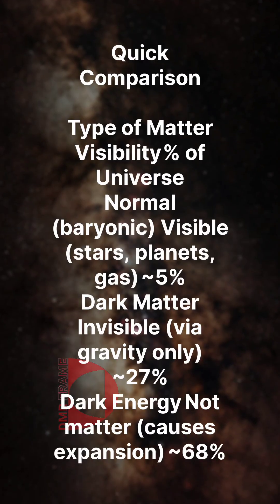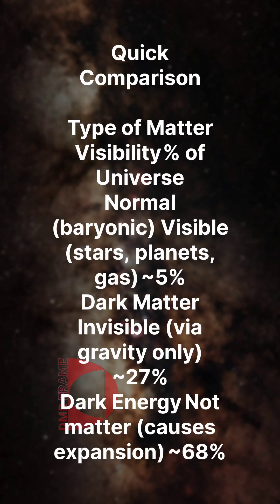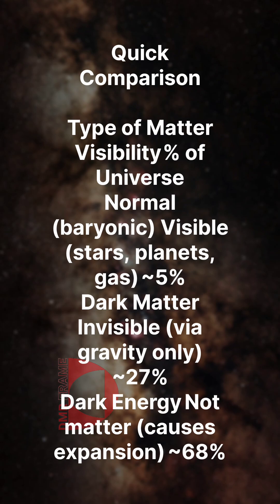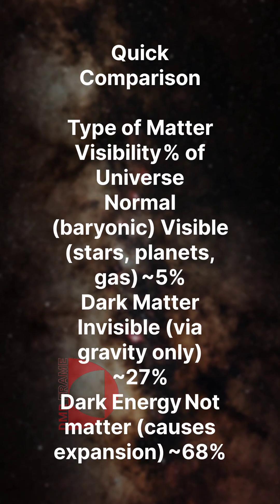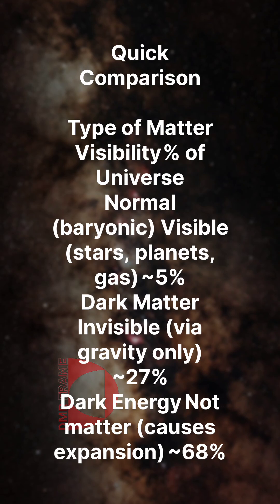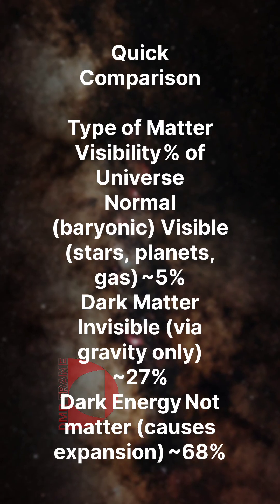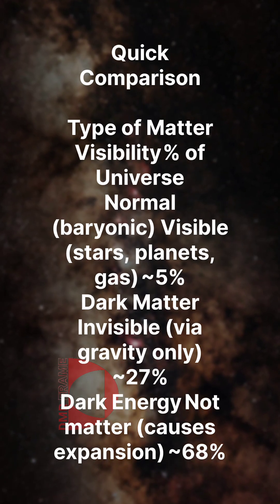Quick comparison — type of matter, visibility, percent of universe: Normal (baryonic) matter is visible (stars, planets, gas) at approximately 5%. Dark matter interacts via gravity only at approximately 27%. Dark energy makes up the remaining approximately 68%.